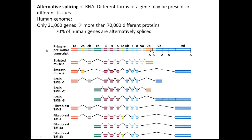Here's an example of one gene that undergoes significant alternative splicing. You can see that in different tissues you have different forms of the gene being made, and presumably many of these proteins have slightly different functions from each other.